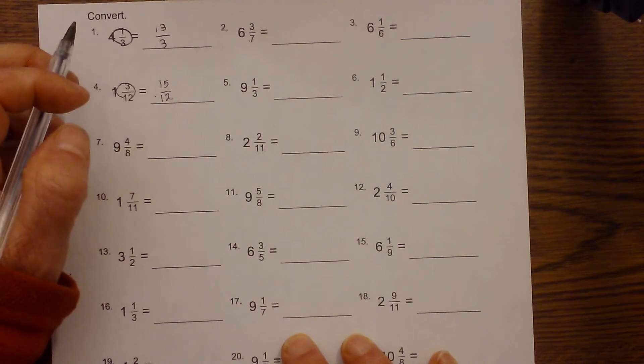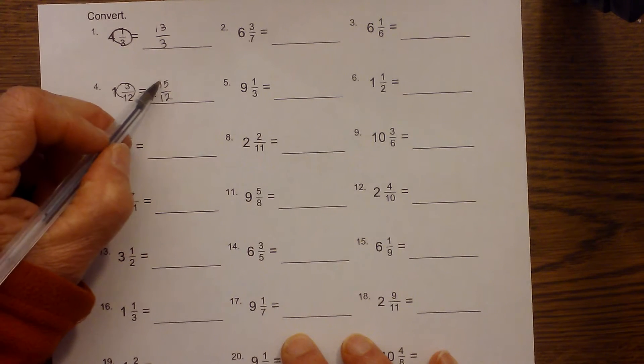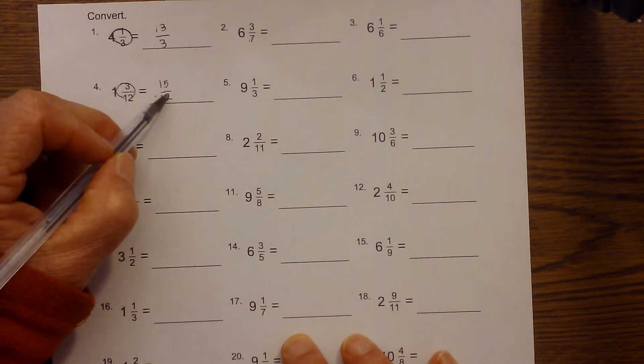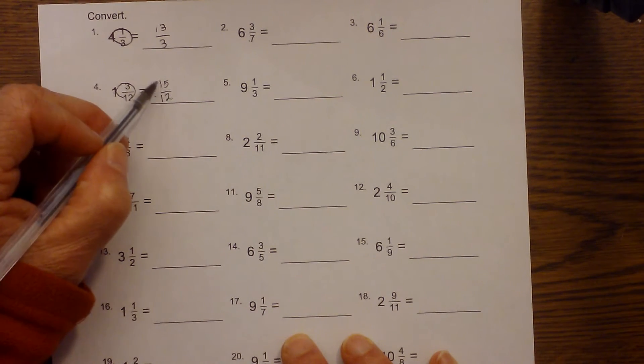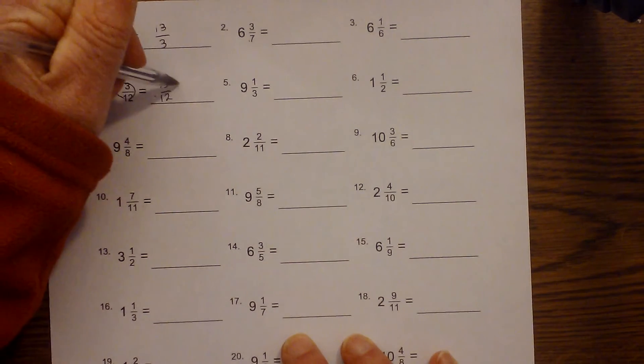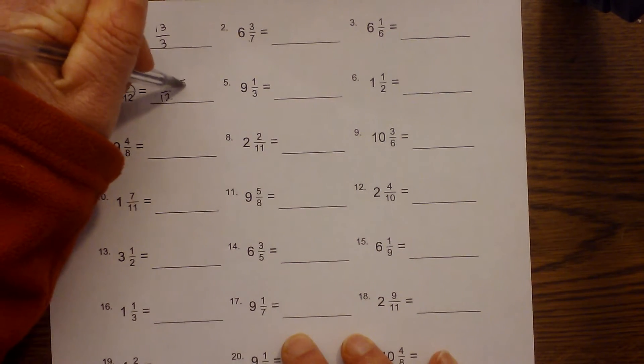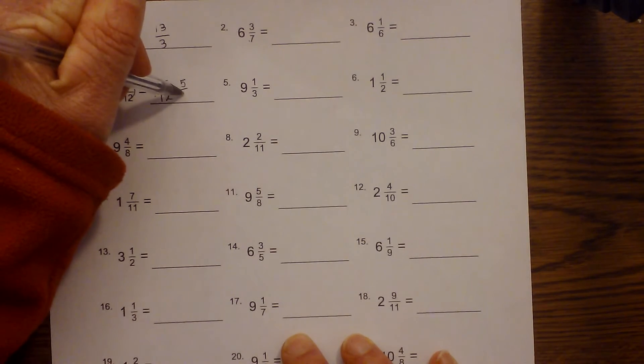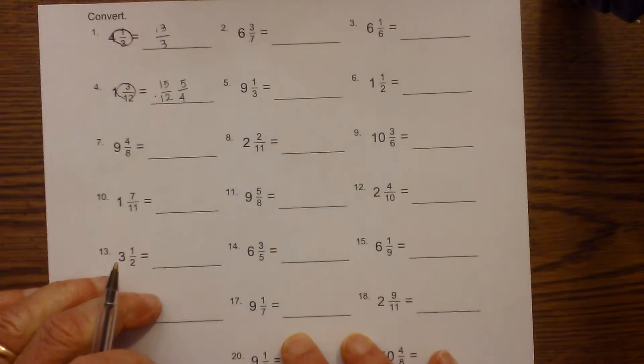Now I know that both of these are divisible by 3 because 5 plus 1 is 6 and 12 plus 1 is 3. It's kind of a little shortcut, so I'm going to divide each by 3. 3 goes into 15, 5, 3 goes into 12, 4 times, so you have 5 fourths.